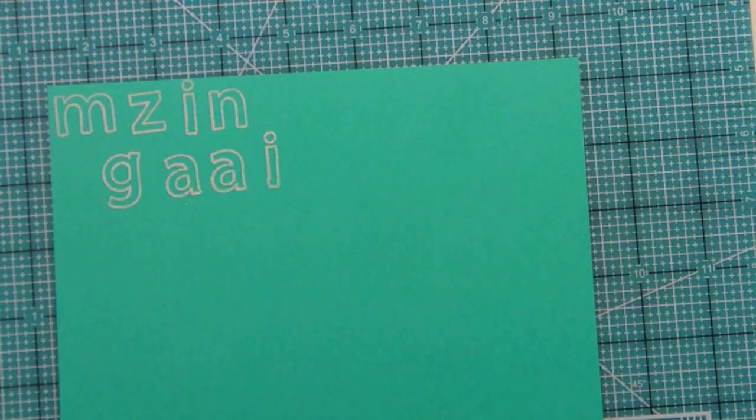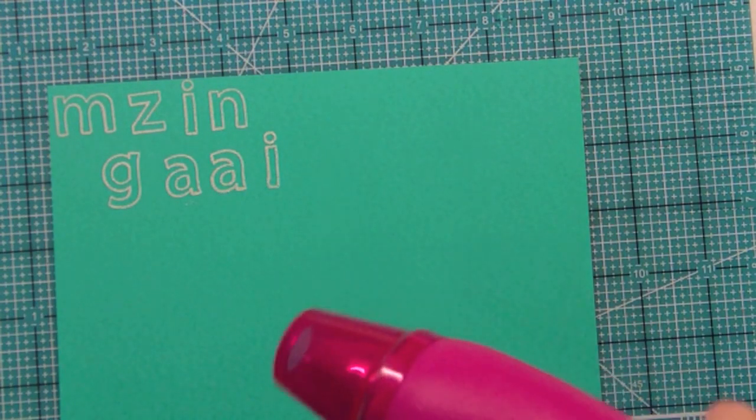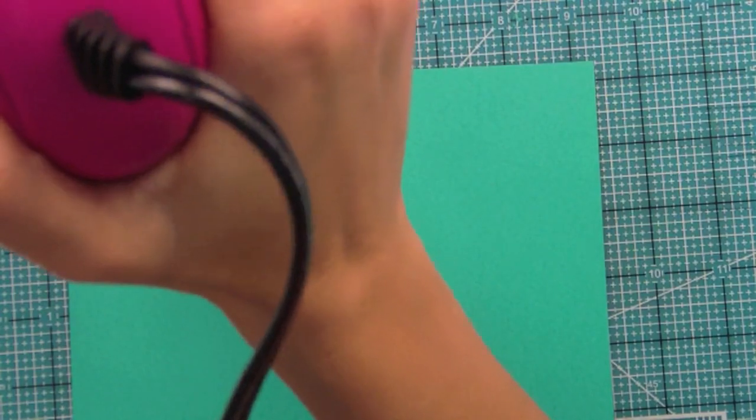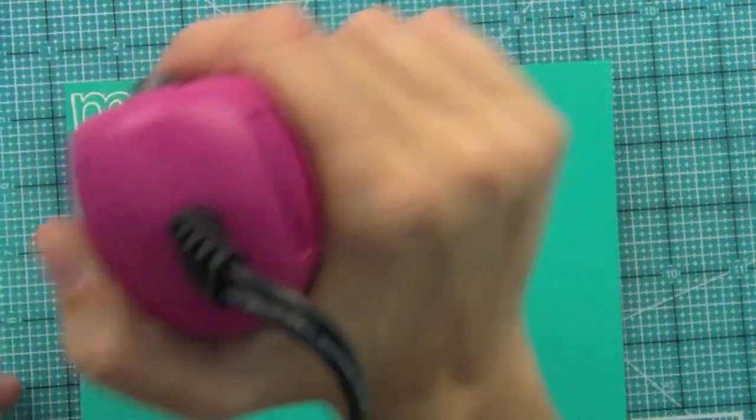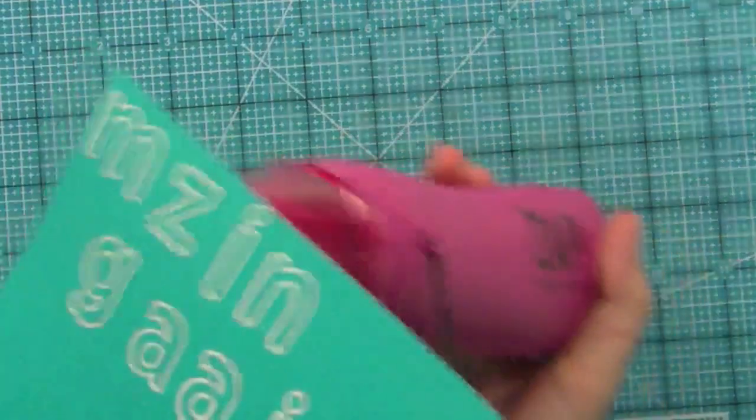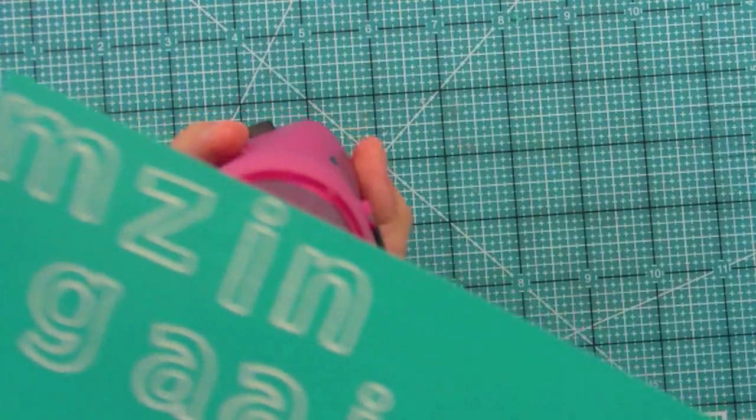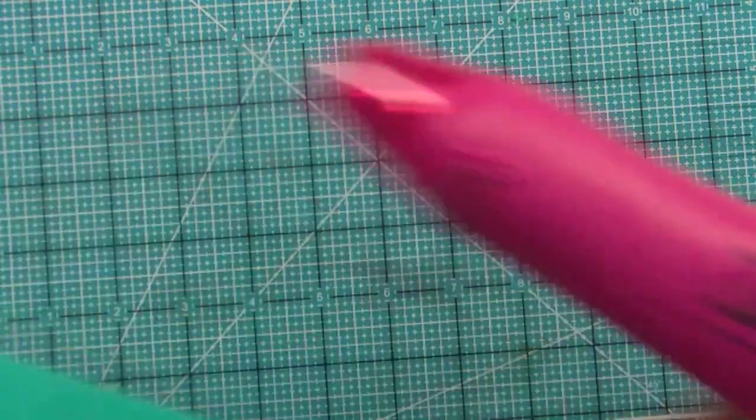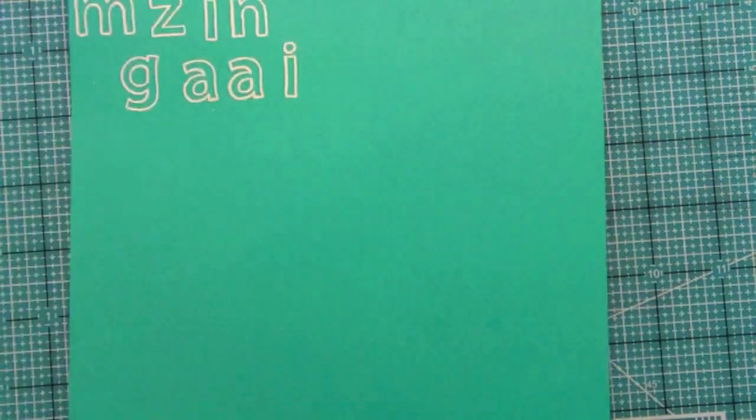Right now I'm just kind of tapping off the excess, but I don't have to be perfect since I am going to be cutting these letters out. If there's a little around the outside, I don't really mind since it won't be there. We're just going to heat emboss this now. I like to keep the heat gun really moving when I do this.